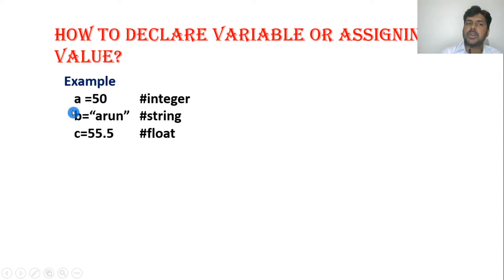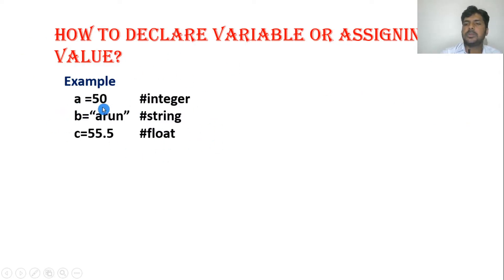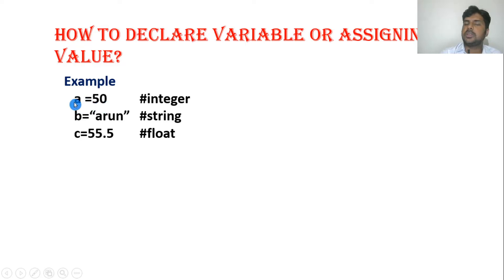So when you assign a value, it will automatically be considered as a declaration of a variable. Once you declare a = 50, automatically 'a' will be converted into the integer data type.